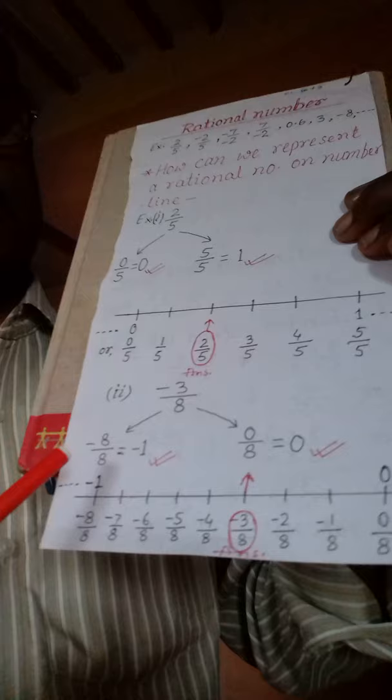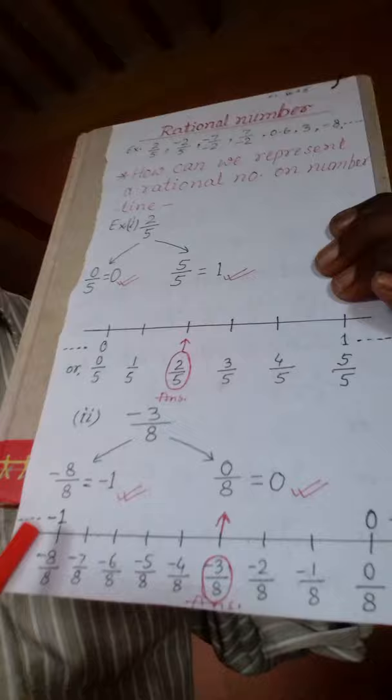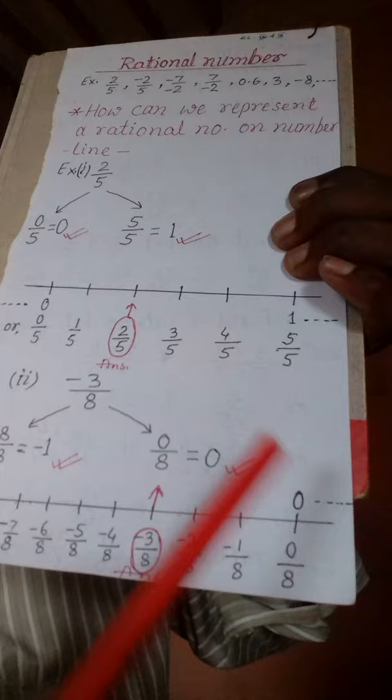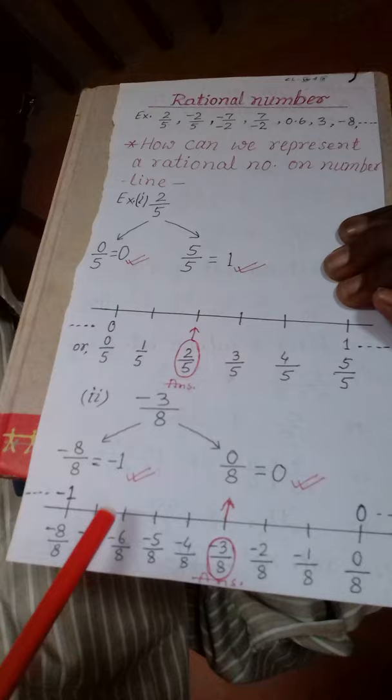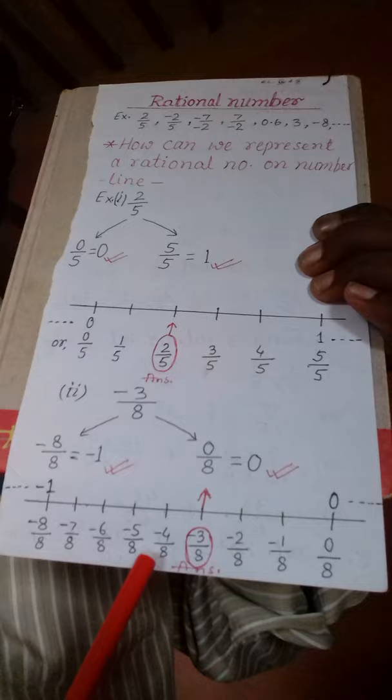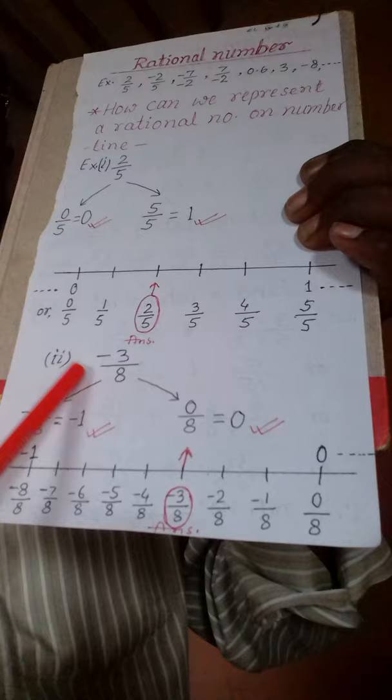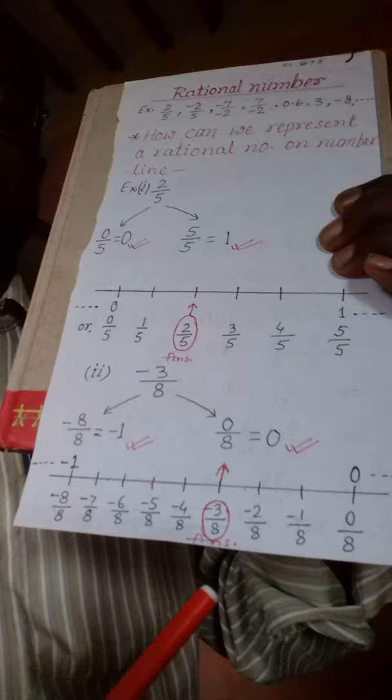अब हमें number line बनाना आसान हो गया। 0 के नीचे 0 by 8, minus 1 के नीचे minus 8 by 8। अब minus 8 से 0 के बीच में हमारा 7 number आ रहा है, तो हमने इस पर 7 marking किया — minus 1 by 8, minus 2 by 8, minus 3 by 8, minus 4 by 8, ऐसे करते हुए सभी number दिखाये। जो number हमें represent करना था minus 3 by 8, वो clearly दिख रहा है — हमने इसको circle किया, arrow mark दिया, और उसे represent कर दिया। That's all — मुझे उम्मीद है आप लोग अच्छी तरह से समझ गये होंगे।